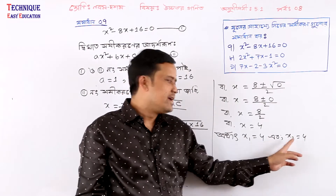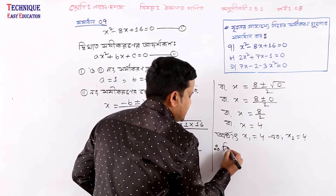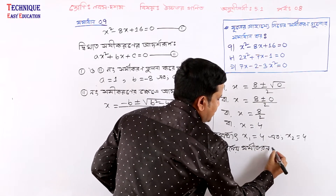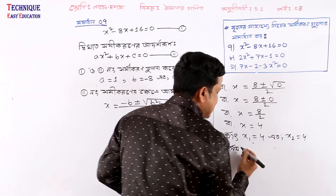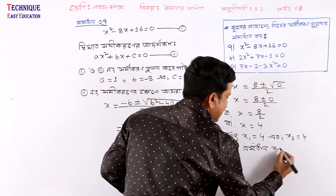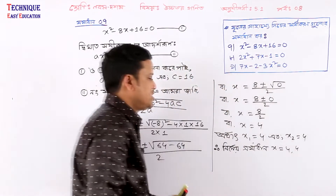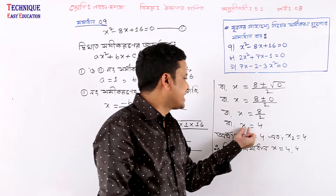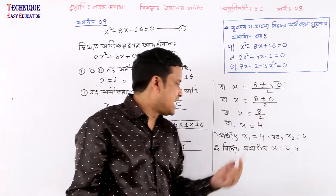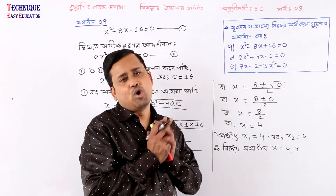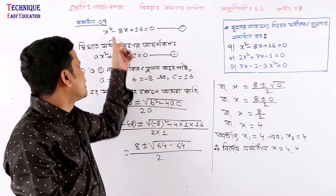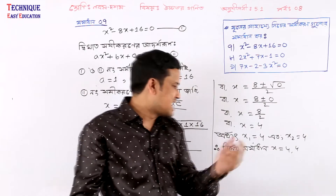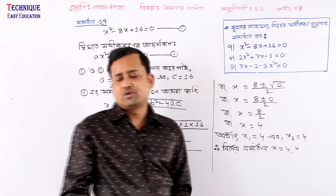So the answer is equal to 4. x1 is equal to 4 and x2 is equal to 4. So x is equal to 4. x1 is equal to 4 and x2 is equal to 4.